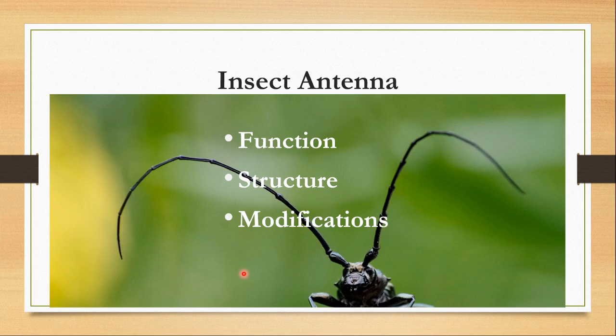I am going to talk about this topic in three units. In the first one I am going to talk about the functions of insect antennae. In the second part I will talk about the structure of insect antennae, and in the third part I will talk about various modifications found in different insects. Now let's start with functions of insect antennae.